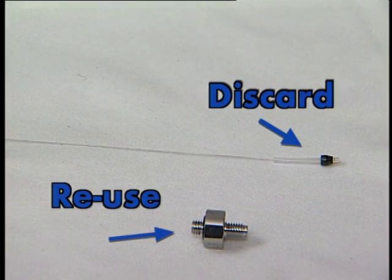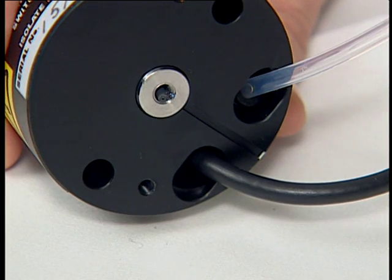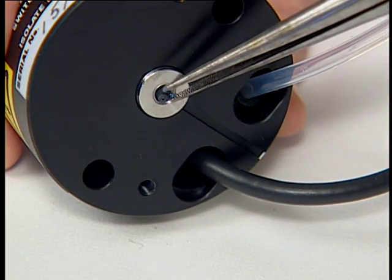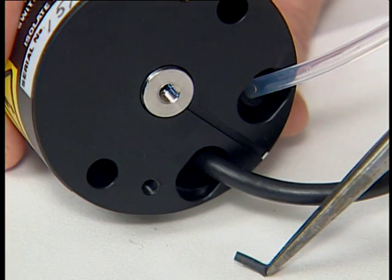Discard the capillary, Teflon liner, and ferrule assembly. Using needle nose pliers, remove the conductive sleeve from the inner bore of the probe assembly fitting.